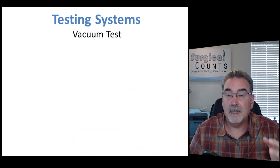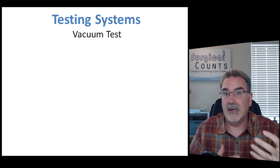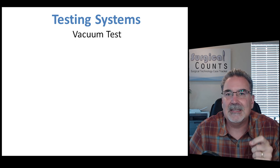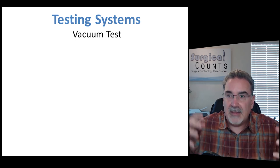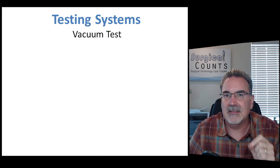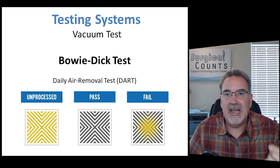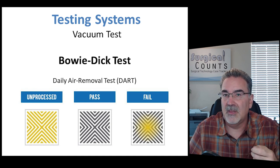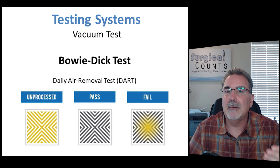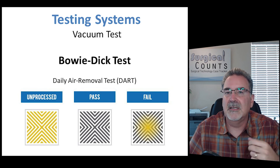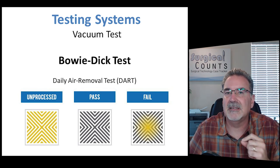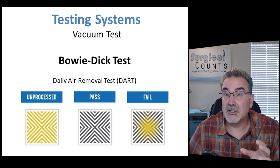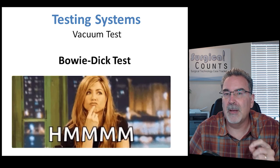Another test done daily on steam dynamic air removal systems is the vacuum test. Dynamic air removal systems suck out all the air and then push the steam in. This test verifies that the vacuum system — sucking the air out and pushing the steam in — is actually able to make that steam penetrate deep into the testing system. These are known as daily air removal tests, or DART — D-A-R-T. A common example of this is the Bowie-Dick test, which is a type of DART test testing the dynamic air removal of the steam sterilizer. To remember that the Bowie-Dick test is used for testing dynamic air removal, think of how dynamic air removal is about sucking out the gas and pumping it back in — associating the word suction with Bowie-Dick will help you remember this particular test.